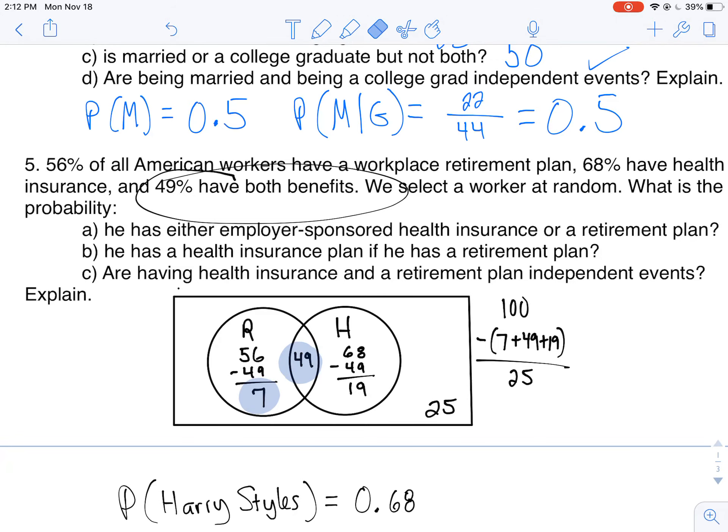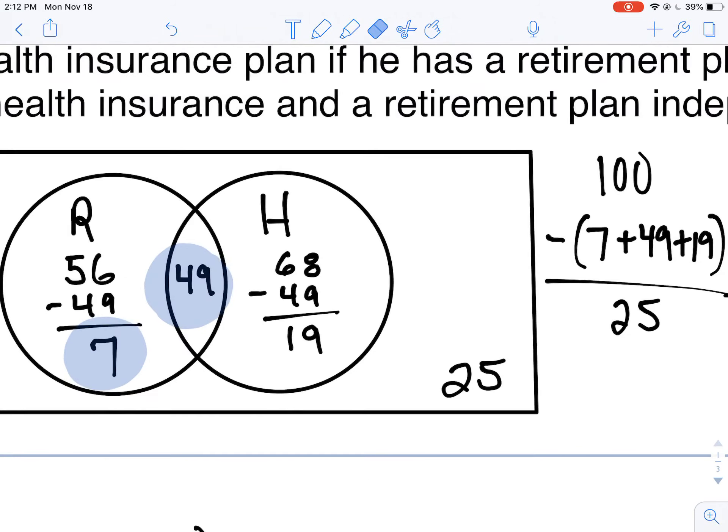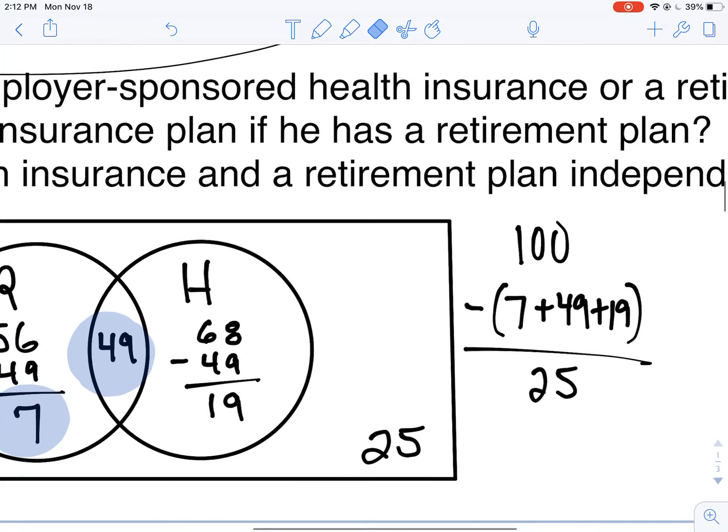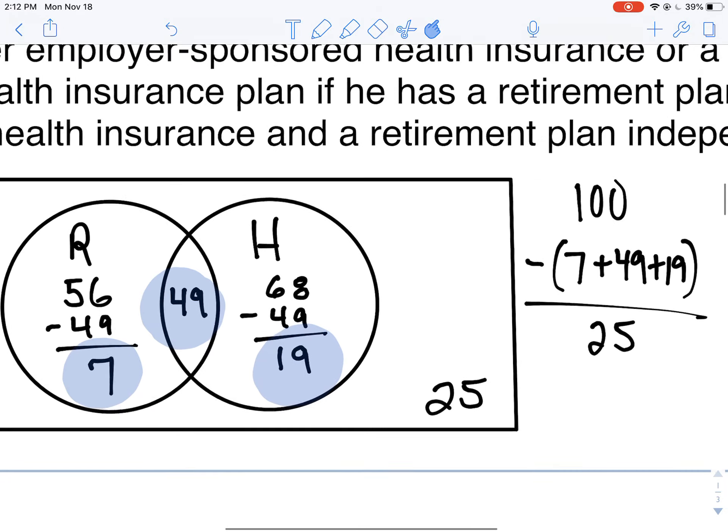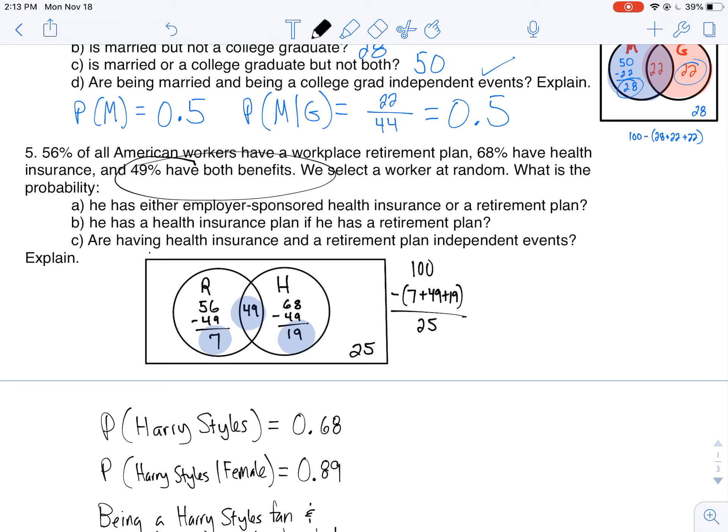First question: has either employee-sponsored health insurance or retirement plan. So it says either, and that could be this or this or this. So what I'm gonna do is include everything in these circles. That represents the retirement plan and the health insurance. So if I add up everything here, I'm gonna get 75.